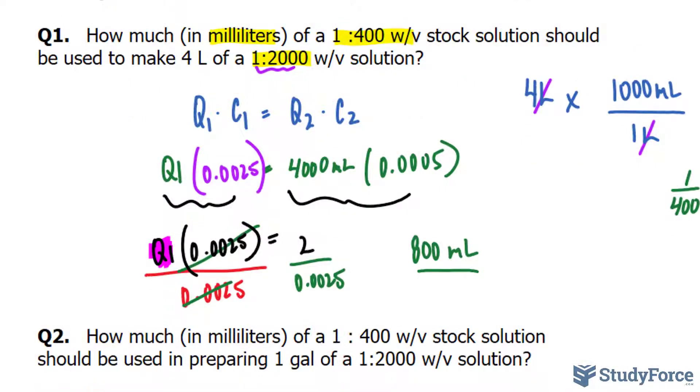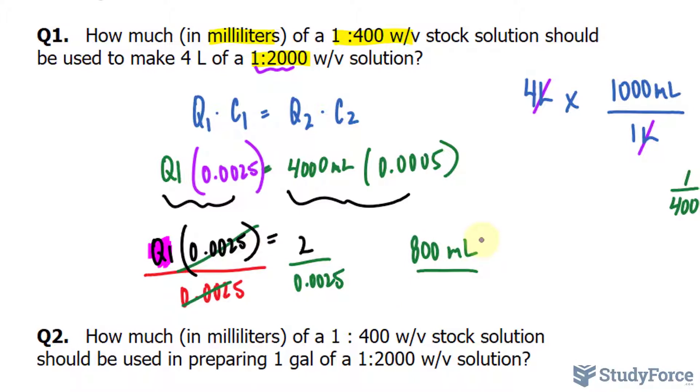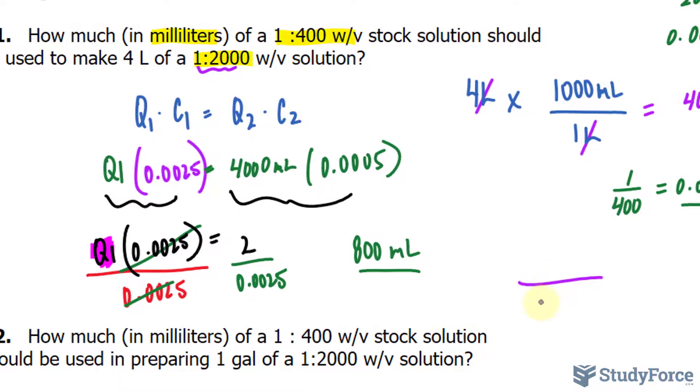Now in case the question also asks for the amount of active ingredient, what you can do is take this 800, which is the total amount of the stock solution, and write it down as a fraction. Put it at the bottom of the fraction, 800 milliliters. That's the total amount. We don't know the amount of active ingredient, and that's what we're looking for. I'll place that up here using the symbol X.